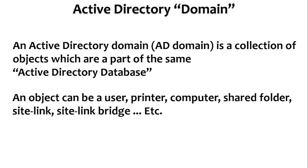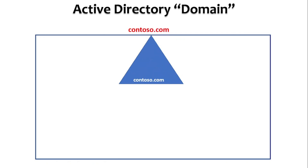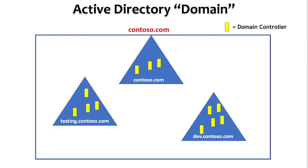A collection of domains which shares schema, configuration partition, and a global catalog is called a forest. Here we have the domain contoso.com, and as mentioned, there can be any number of domains in the contoso.com forest — here we have testing.contoso.com and dev.contoso.com. Definitely every domain will have its own domain controllers which host the active directory database.